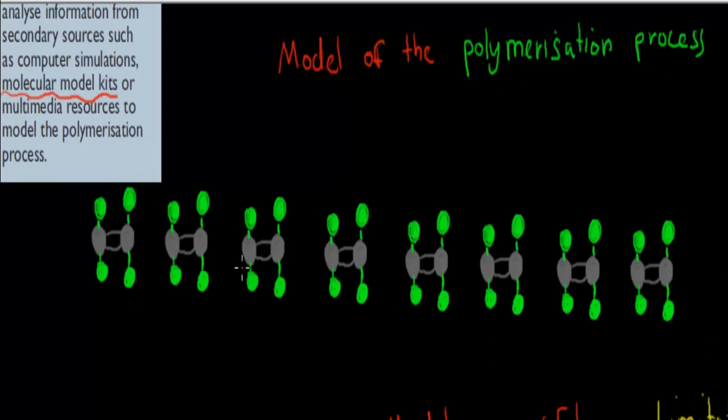What you might have done is you would have had these different models. These are meant to be ethylene. The grey ones would be carbon. So the grey ones are carbon. Usually they're actually white. Hydrogen is usually white, but in this case it's green.